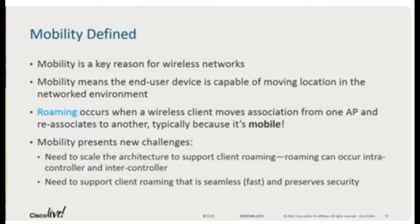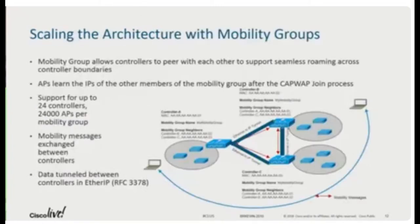Every time you deploy a wireless network, the key item is mobility. That means you have your phone and you're watching YouTube or running Citrix or on a voice call, and you want to maintain connectivity between one AP and another AP, as well as across controllers. For example, using two controllers for Cisco Live deployment — as you move from this building to the next building, you want to maintain connectivity. To do that, we have a concept called mobility groups, where you put controllers as part of the mobility group and they form an Ethernet over IP tunnel.